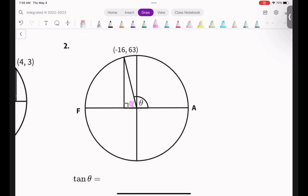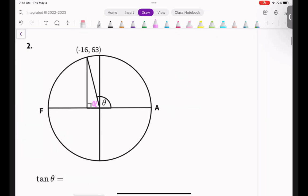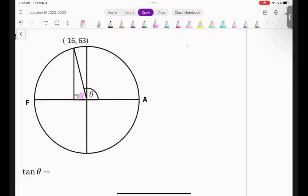So the very first thing that you're going to do, which they already did for you, is number one, I'll try to write directions. Number one, graph the point, or the angle, whatever they gave you. And they did that for you, so we don't have to do that. Number two, draw triangle. Now, they already did that for you.